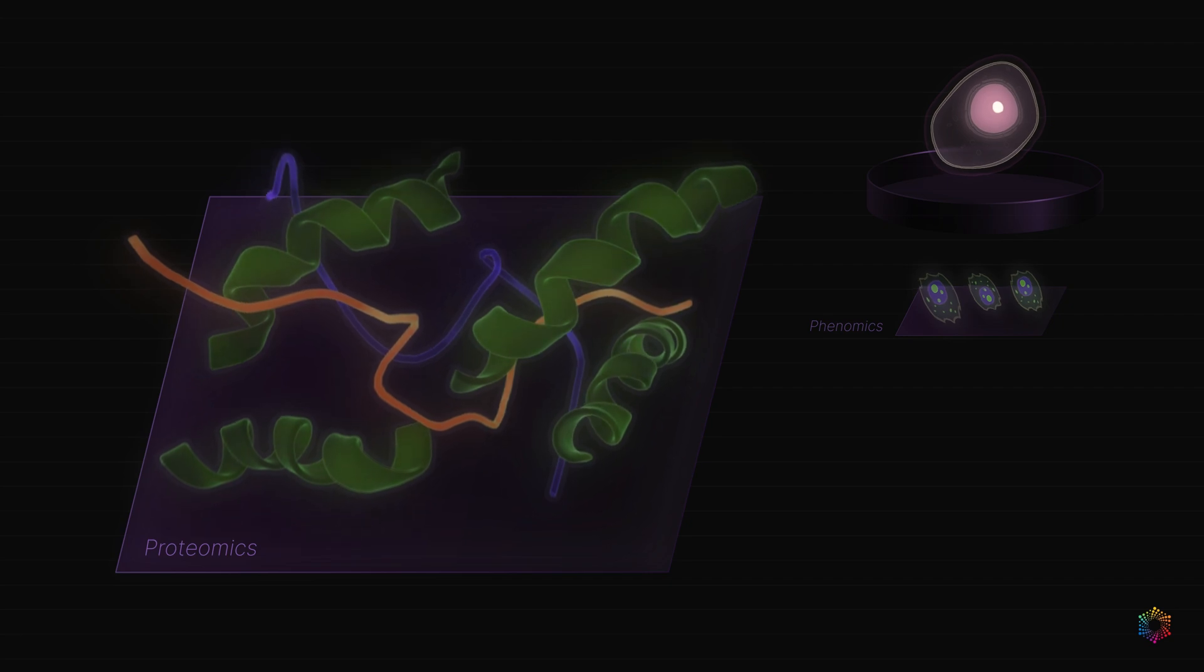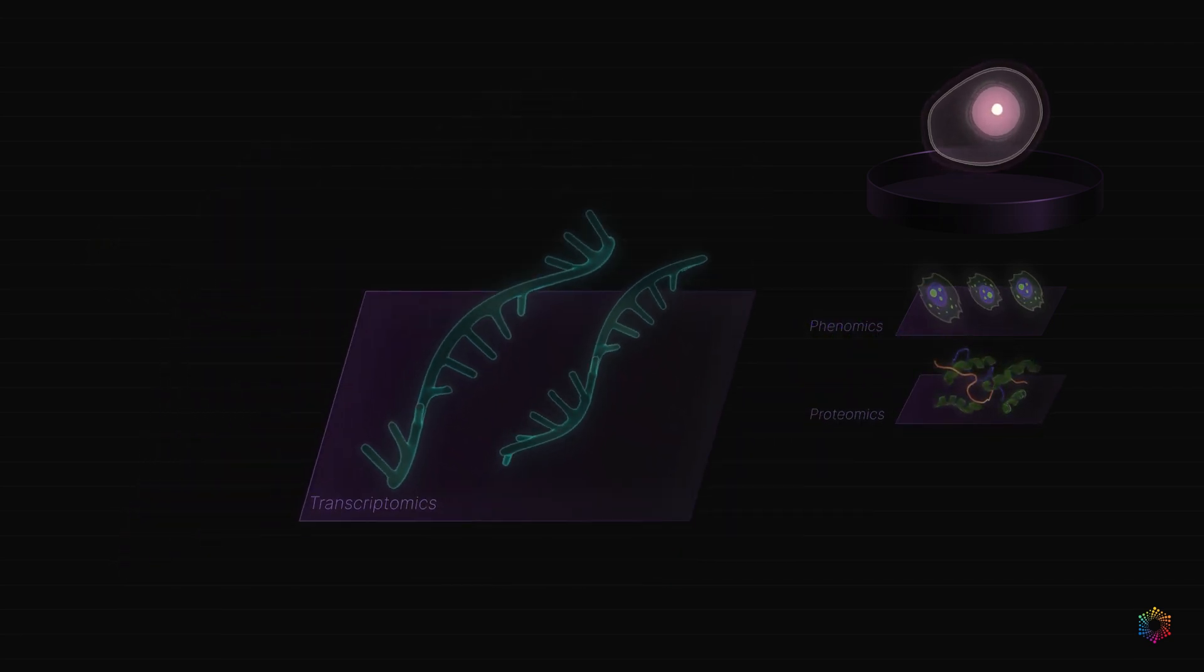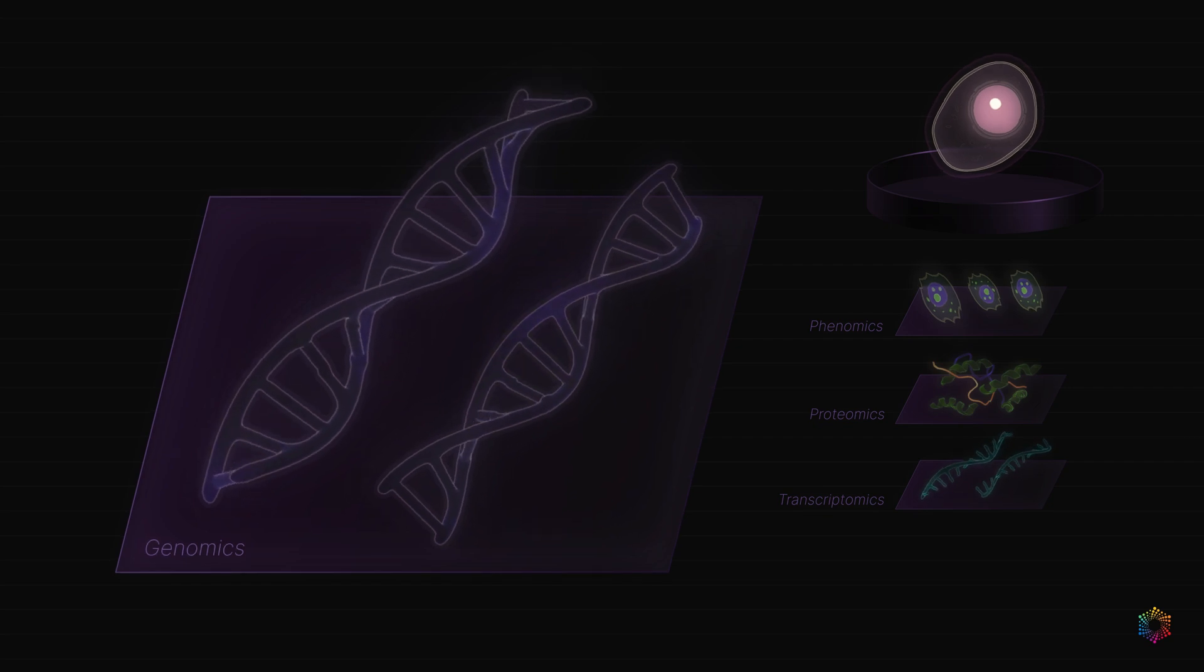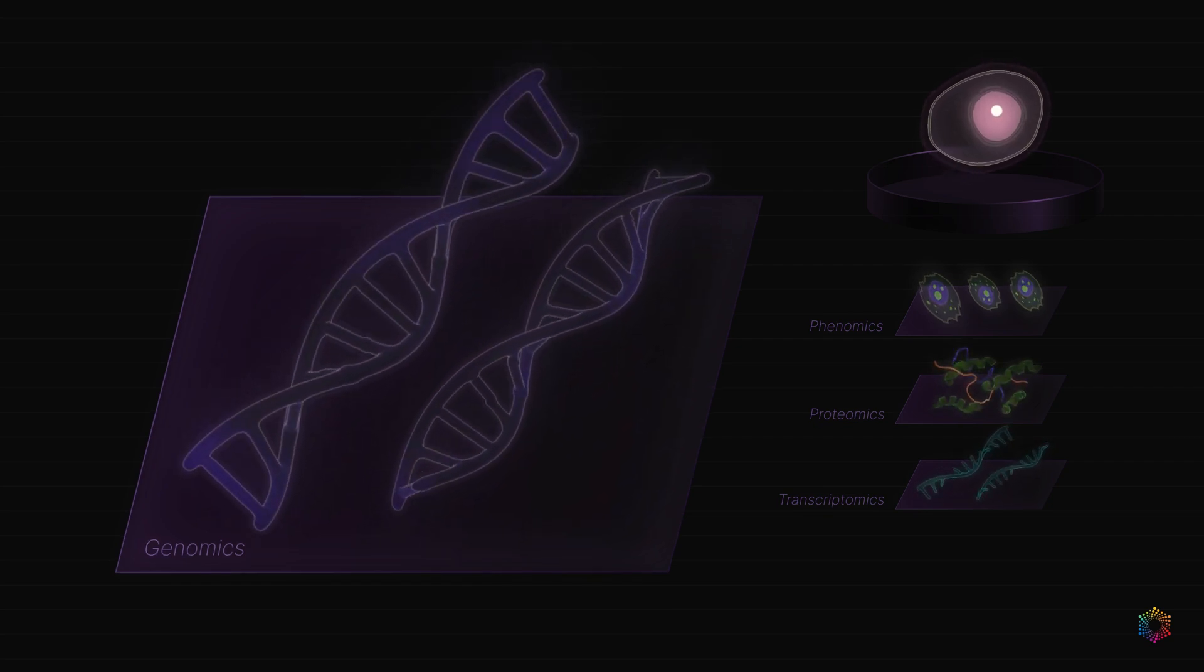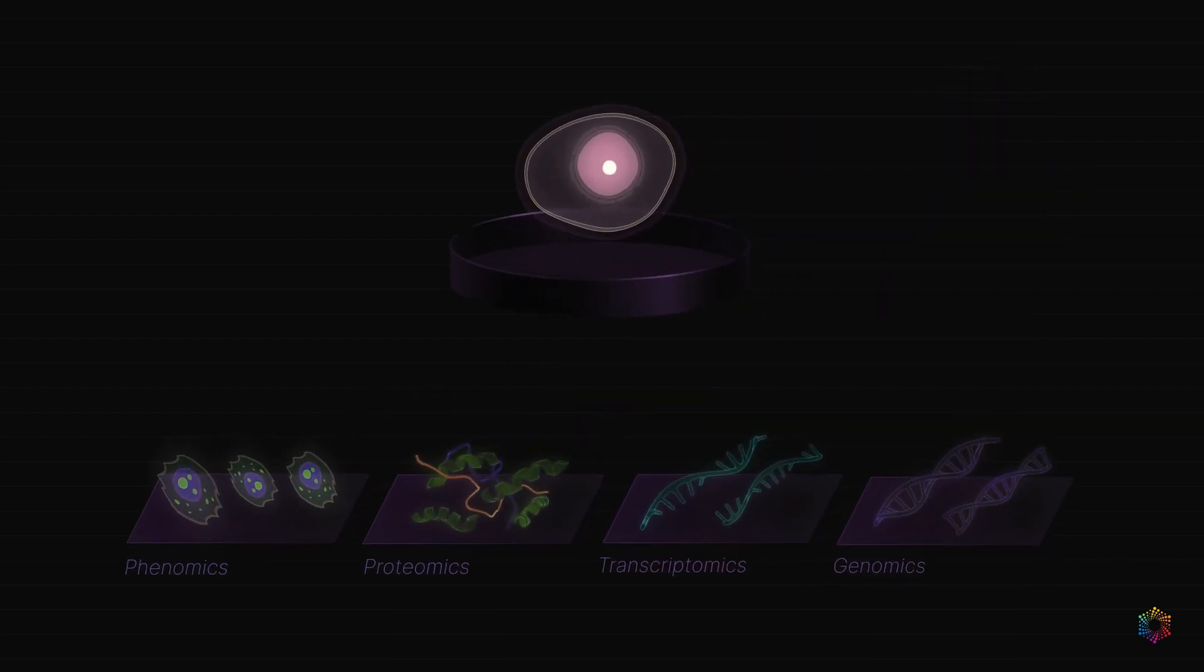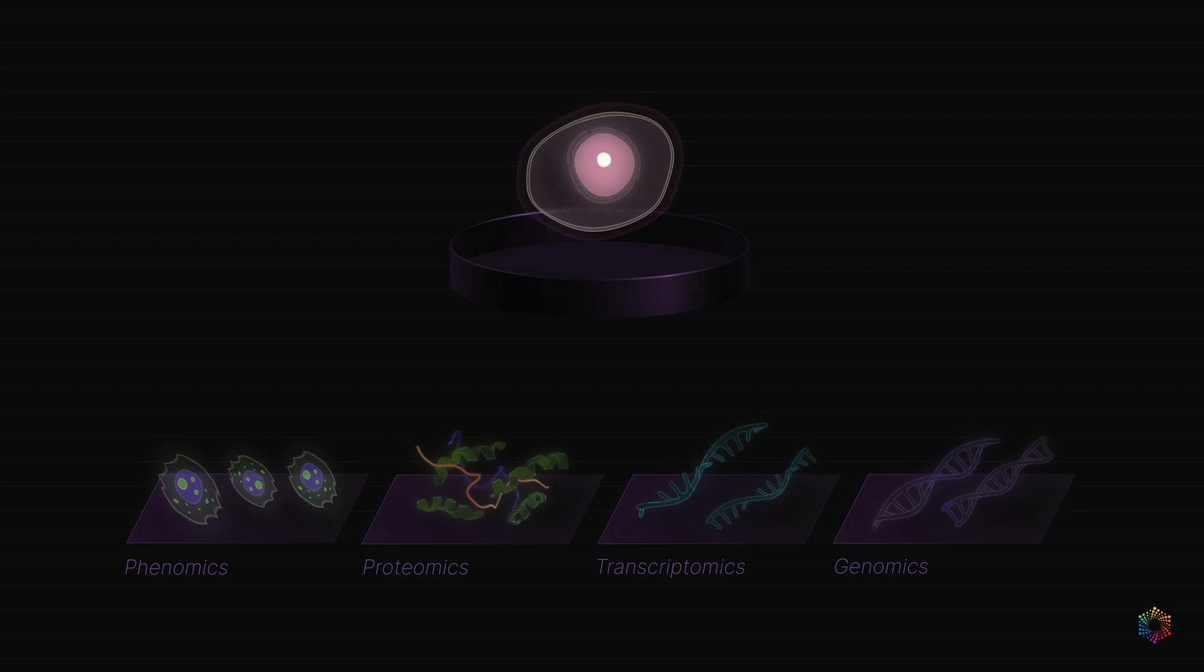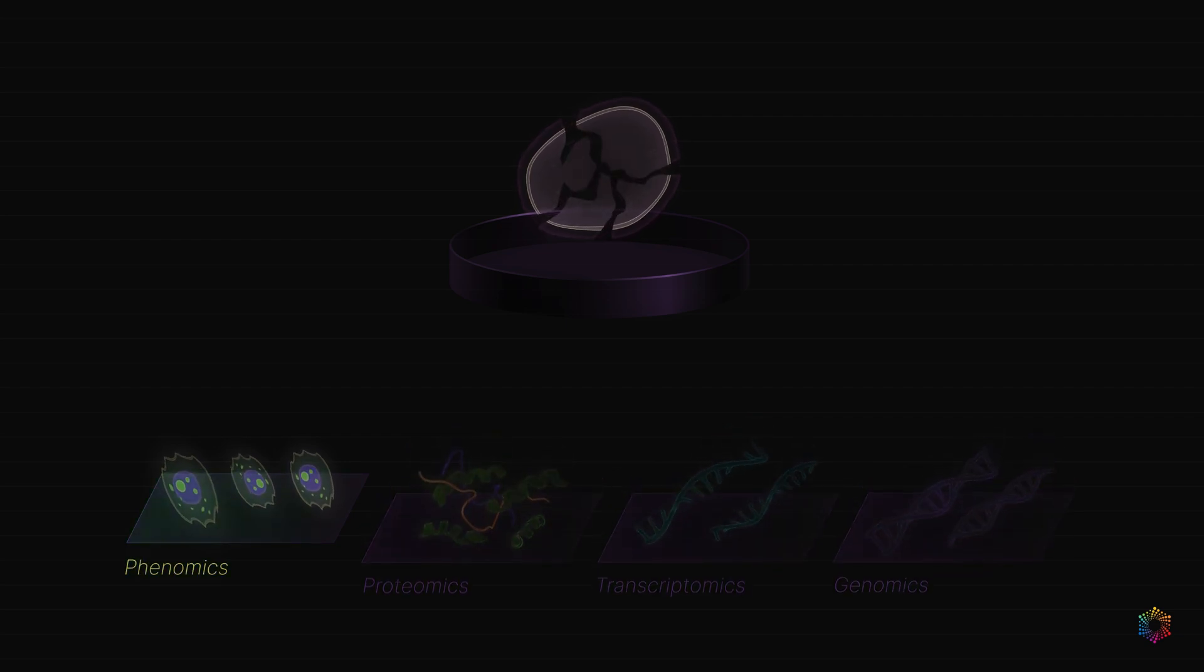Proteomics, where we measure the protein profile; transcriptomics, where we measure the RNA levels; and genomics, where we measure the DNA levels. Collectively, they could enable us to build multi-scale representations of biology. In biology, unpaired data is the norm because these experiments are destructive processes. You can only measure one modality at a time before the cell is destroyed.